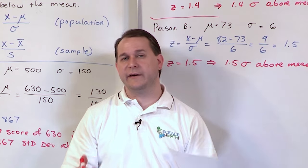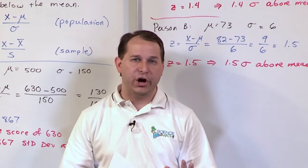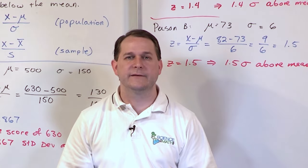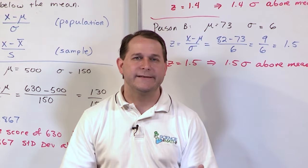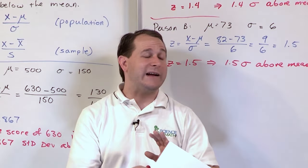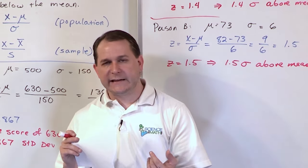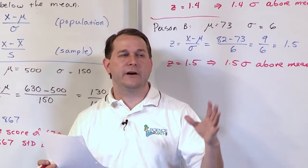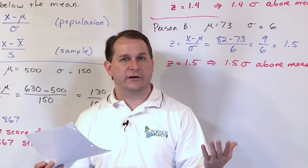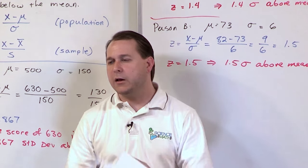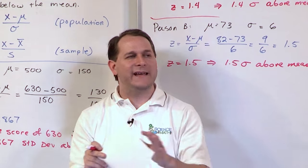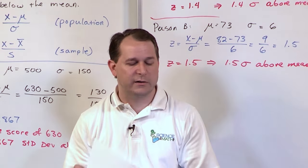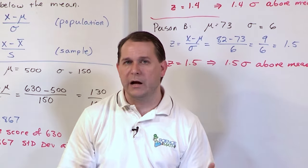That does it for Z-scores, and that concludes this batch of lessons for Mastering Statistics. We've covered a tremendous amount of material: the very basics of what a population is and what a sample is, data outliers, sampling bias and making sure you choose a nice cross-section of your population, calculating the mean, standard deviation, variance, and coefficient of variance, rolling all that together to calculate the five-number summary of data using quartiles to get an idea of what your data looks like, and of course the Z-score.